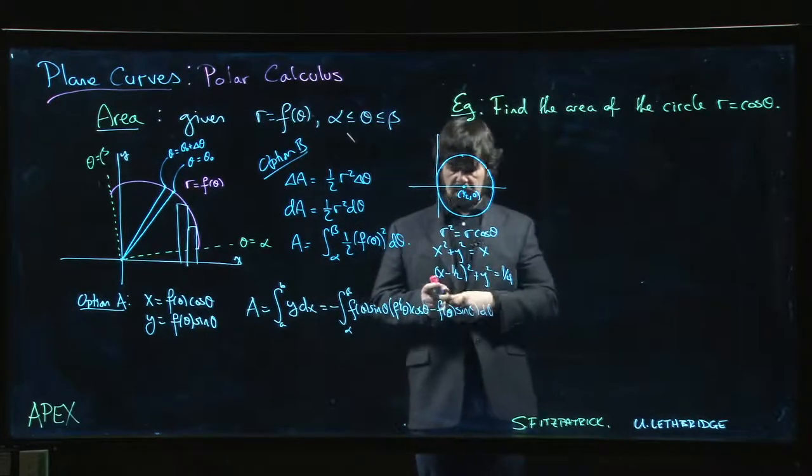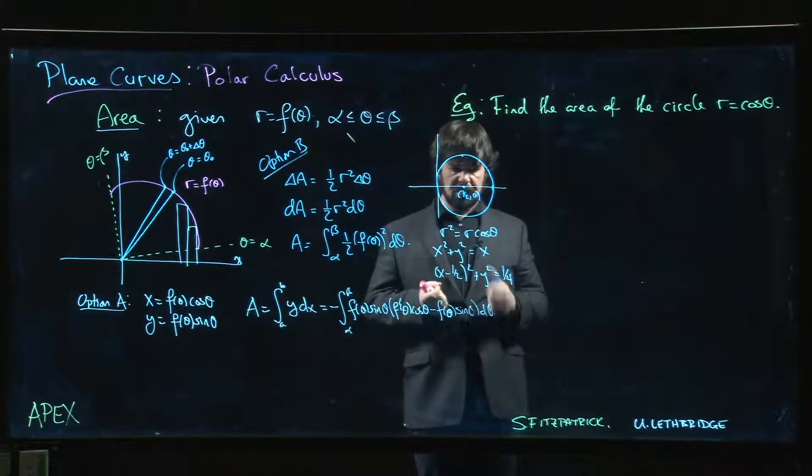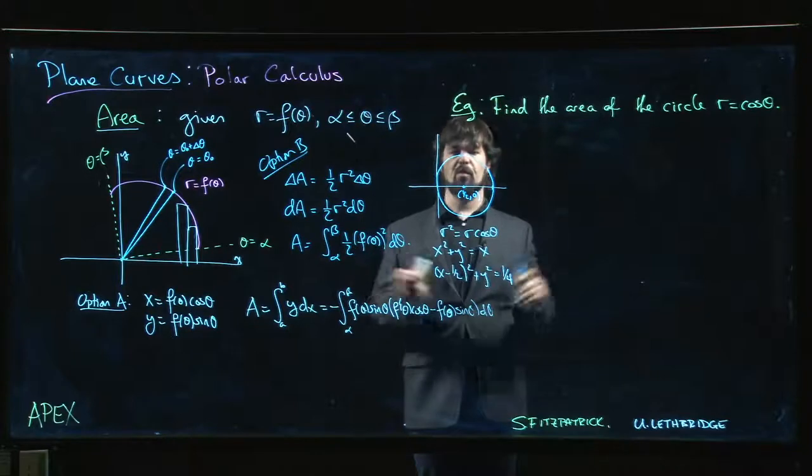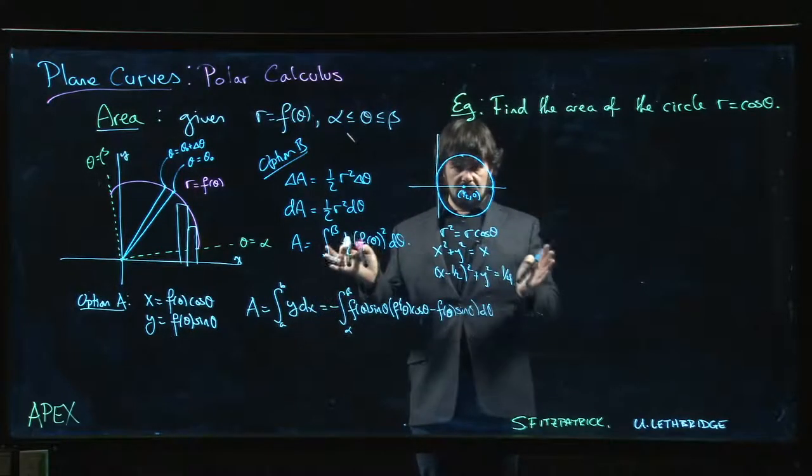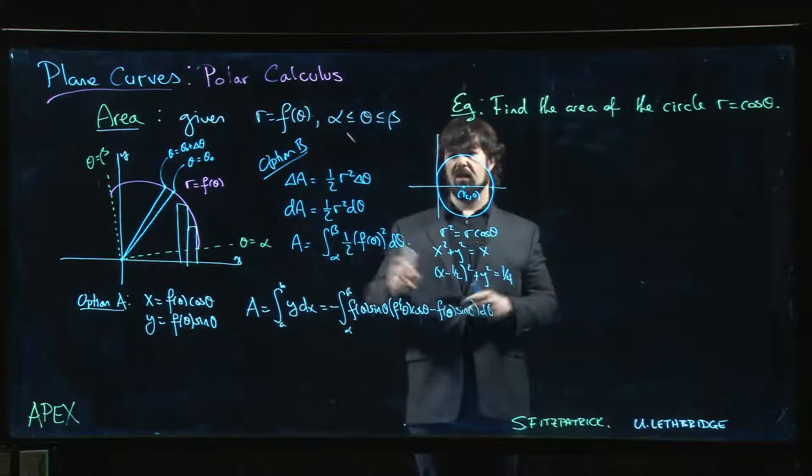Now, knowing that the radius is 1 half, we expect that we should get an area pi r squared, so we should get pi over 4. Pi over 4 should be the area of this thing, but let's use the formula anyway. At least it will give us confirmation that this is a valid approach.